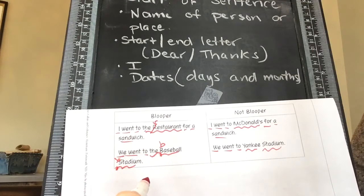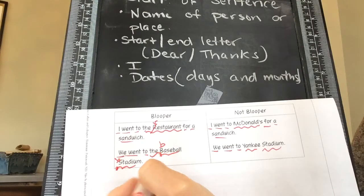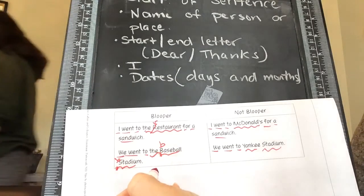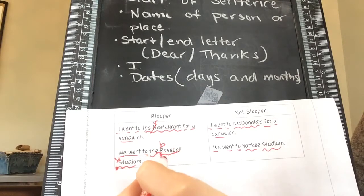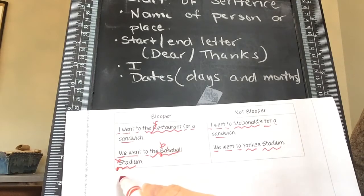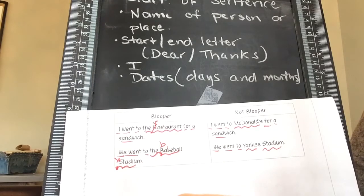If it said 'going to the Giants Stadium,' then it would be an uppercase G and an uppercase S because that's the name — the Giants are our team, or maybe the A's are your team. Because that's a particular team, those would be uppercase. But this just says 'baseball stadium,' so that would not be uppercased.